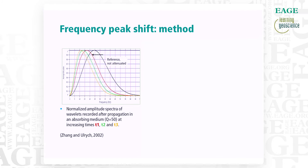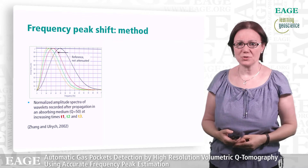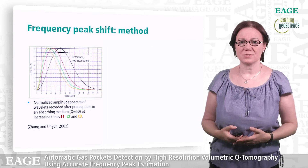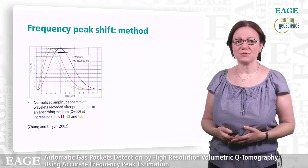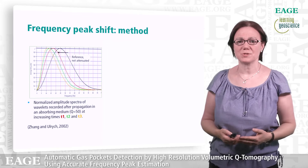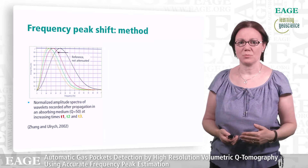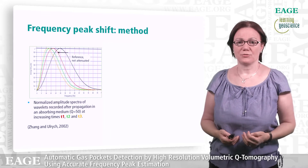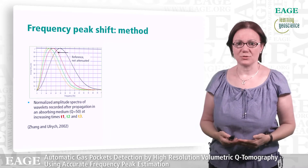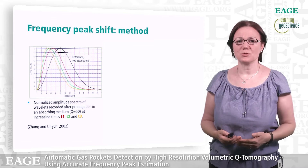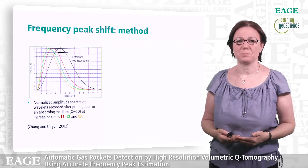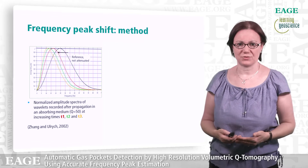As we have seen, the absorption results in a shift of the amplitude spectrum from high to low frequencies. For this reason, we decided to estimate the quality factor Q using a method called frequency peak shift.